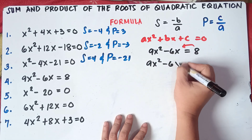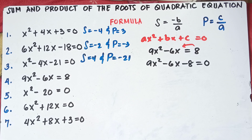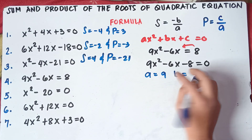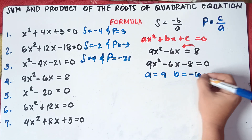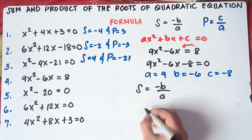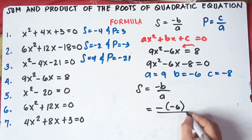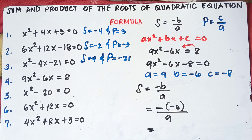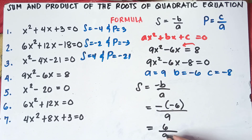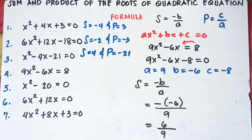Since we're already in standard form, find the value of A, B, and C. A is beside X squared: A is 9. B is beside X with exponent of 1, the linear term: B is negative 6. C is negative 8. For the sum, negative B over A: copy negative sign, and B is negative 6, so put parentheses. Negative times negative is positive 6, over A which is 9. We get positive 6 over 9. We cannot divide to get a whole number, so we need to reduce the fraction. We are not allowed to have a decimal answer.